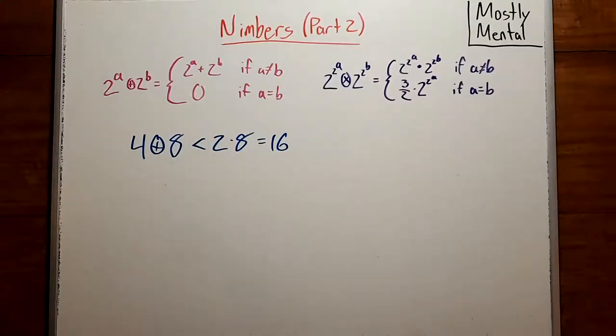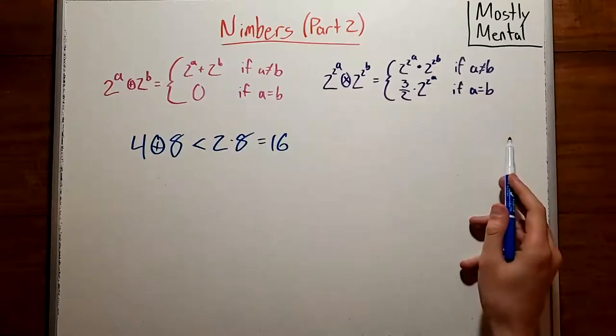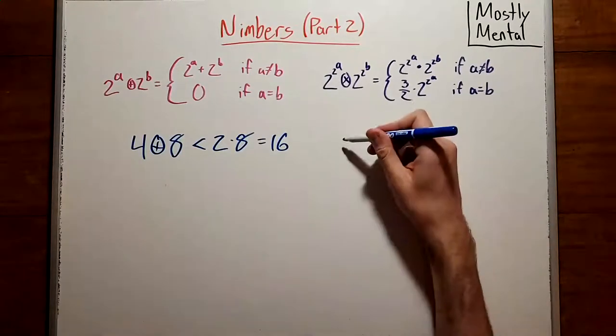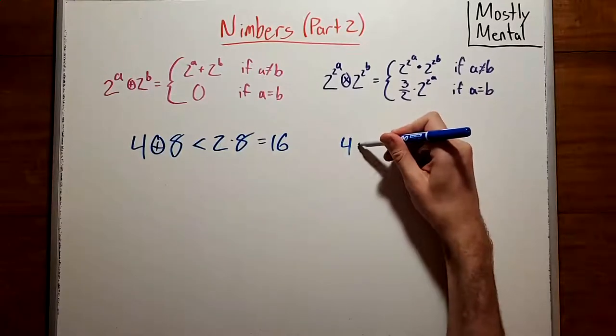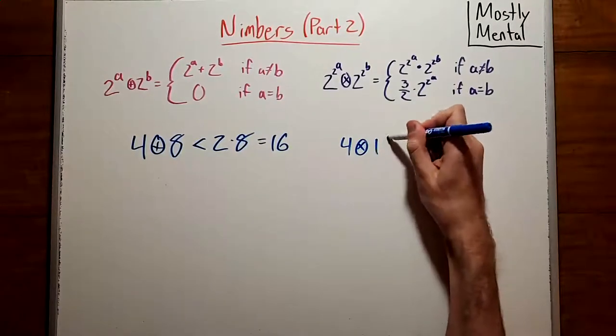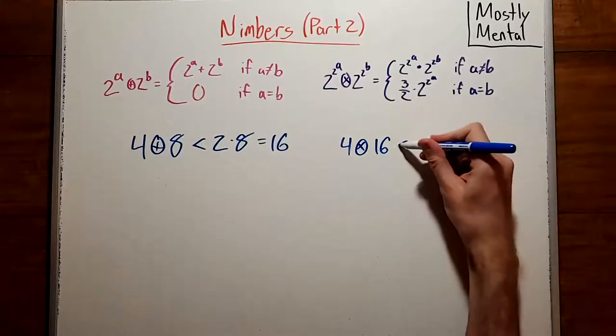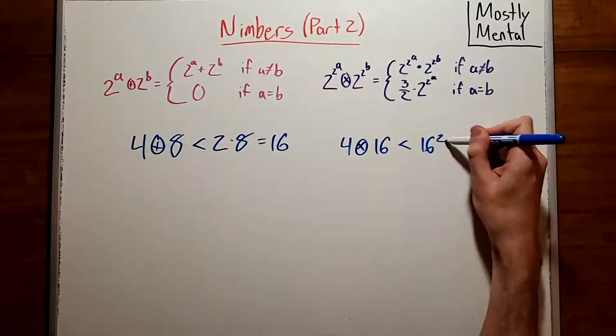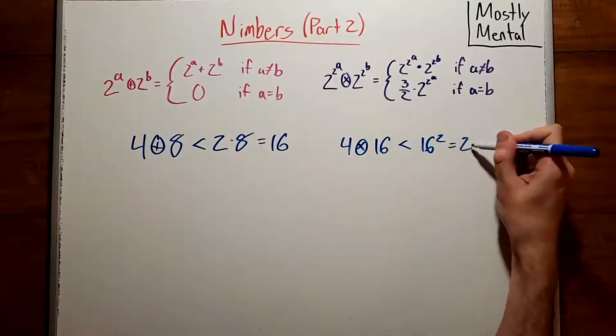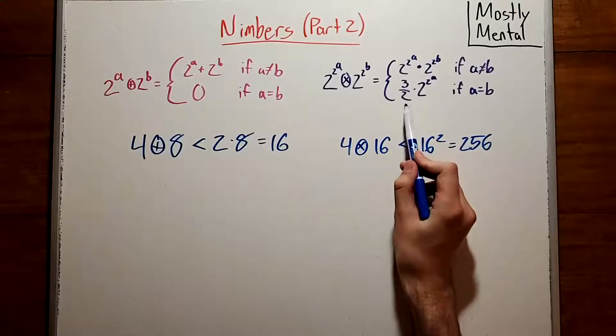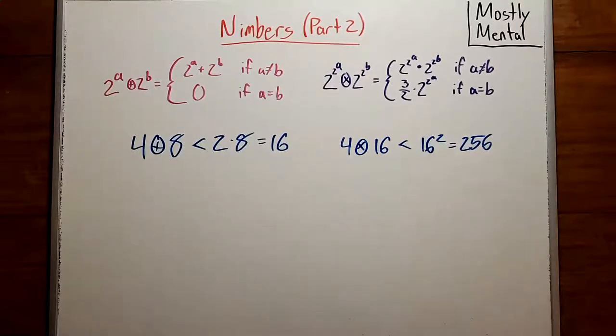And similarly, if we multiply Fermat 2 powers, we can't end up with a larger Fermat 2 power, since if we multiply two different 2 powers, that will always be less than the larger squared. And if we multiply two of the same, we get 3 halves times that, which is much smaller still.